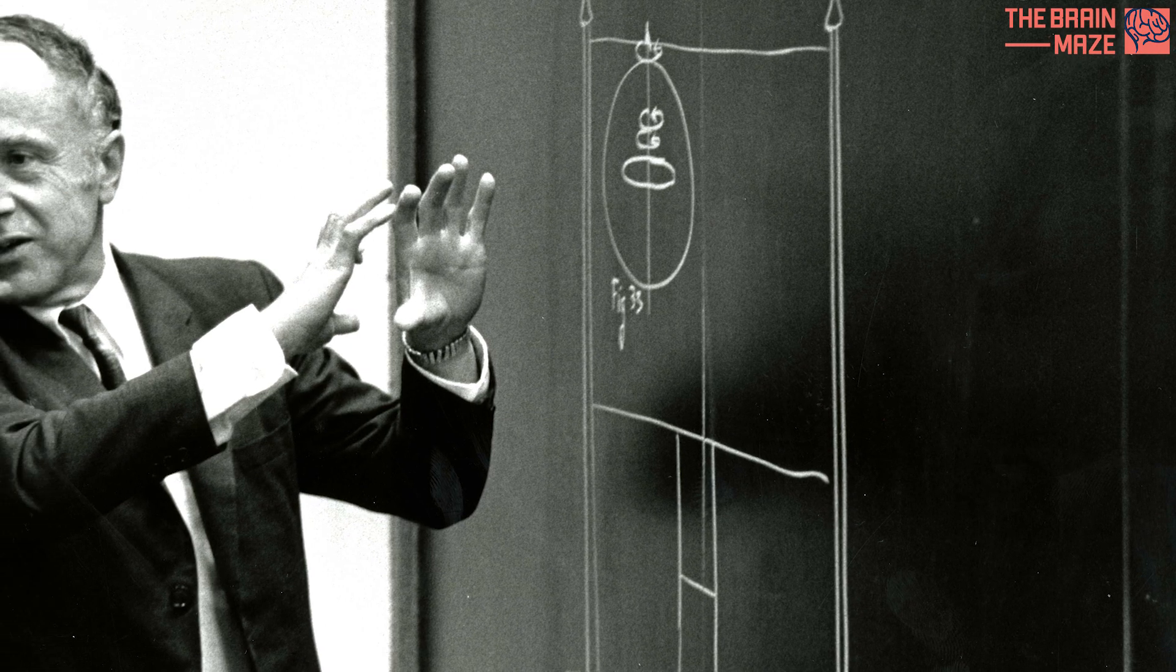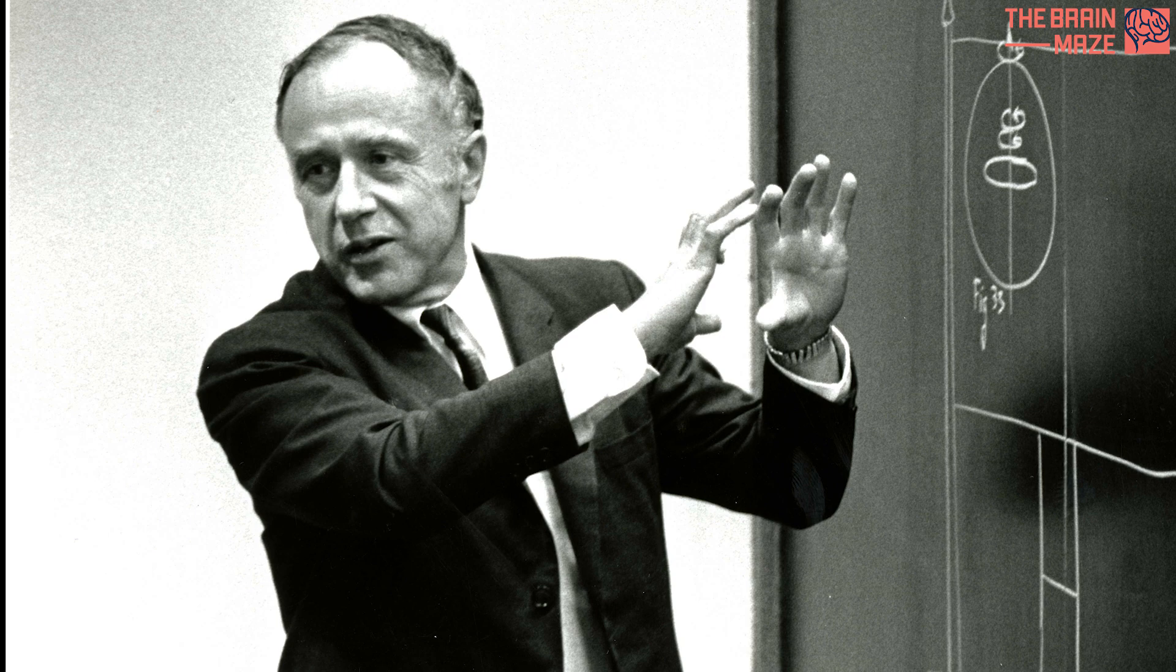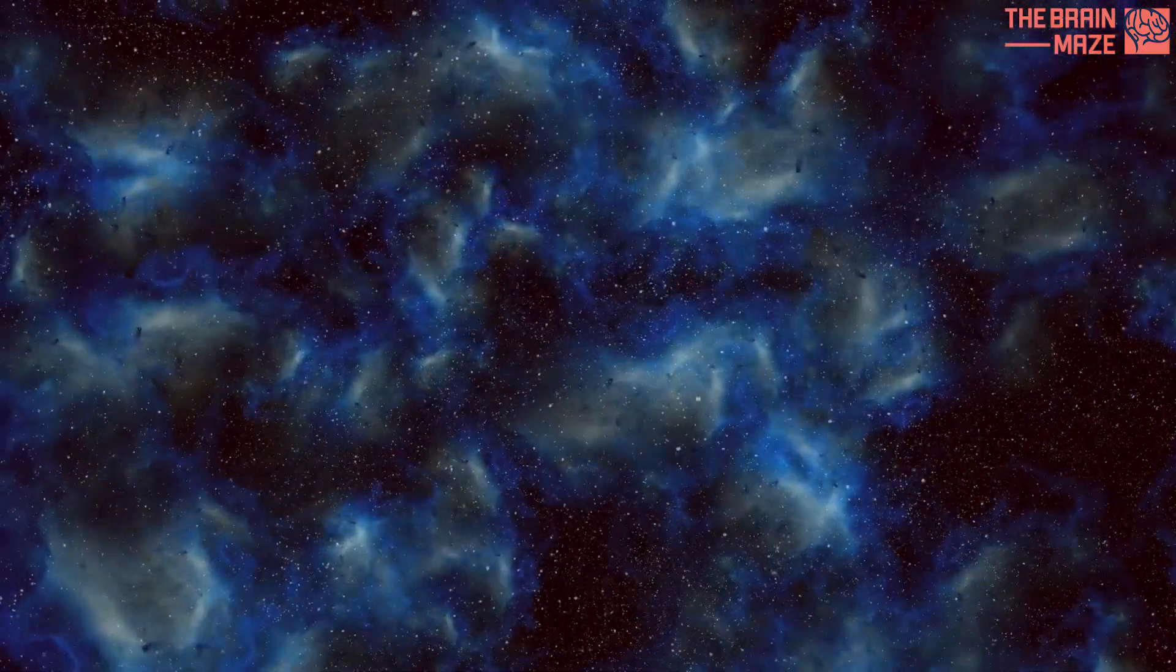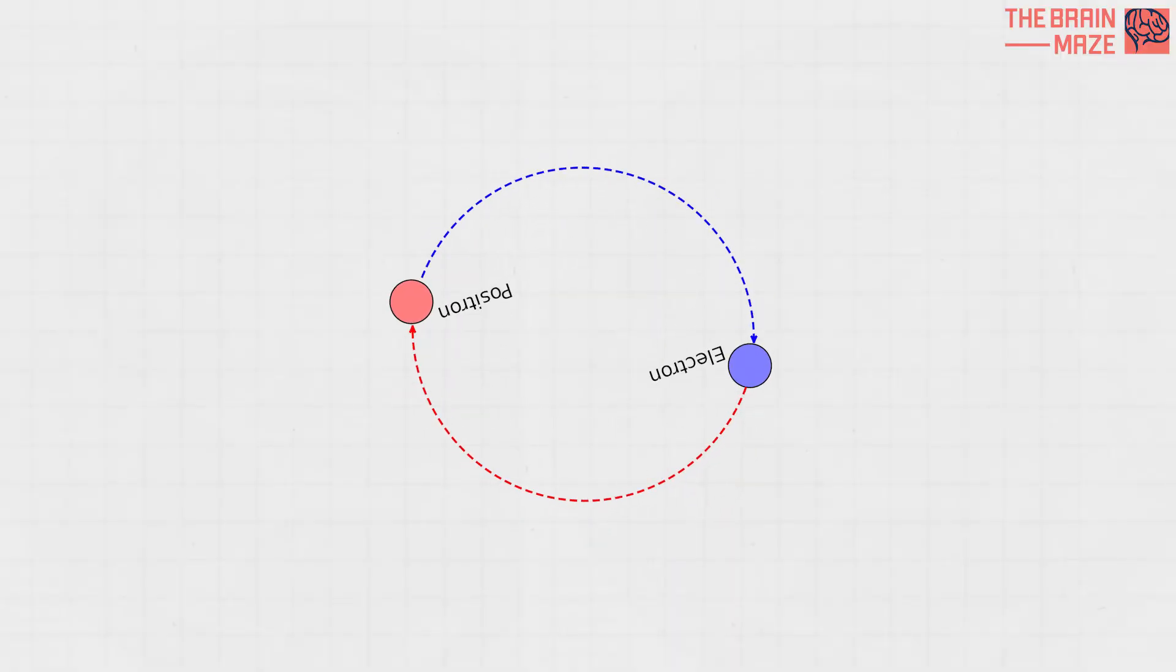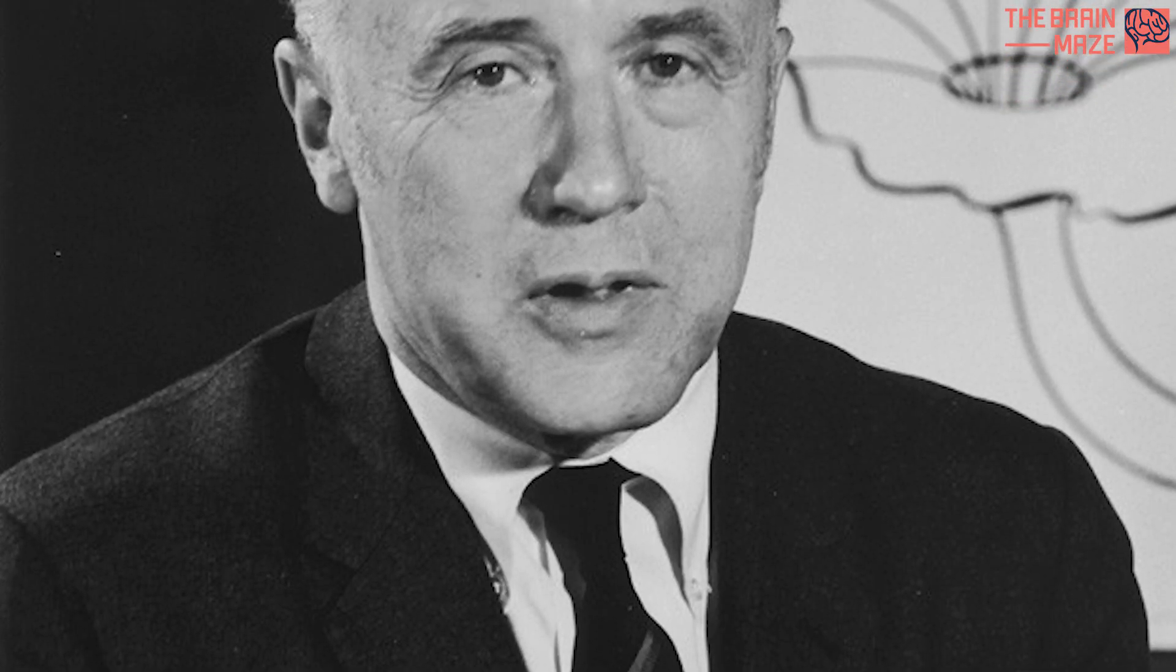This theory offers a captivating explanation for the electron's identical nature. However, it faces a major hurdle, the imbalance of matter and antimatter in the universe. If electrons and positrons were the same particle, there should be roughly equal amounts of both. But in reality, antimatter is incredibly scarce.